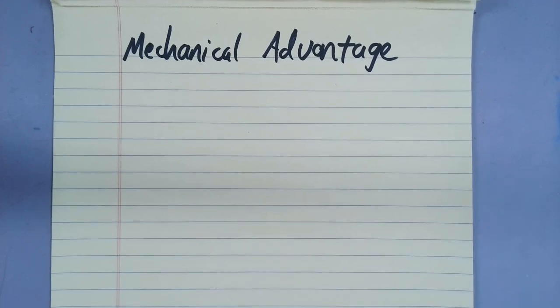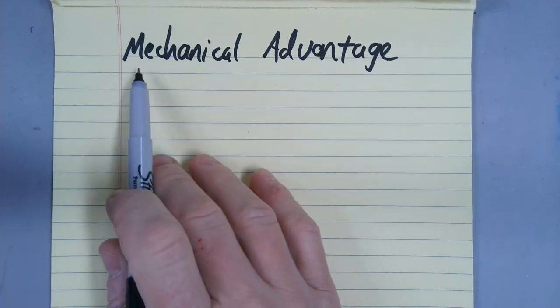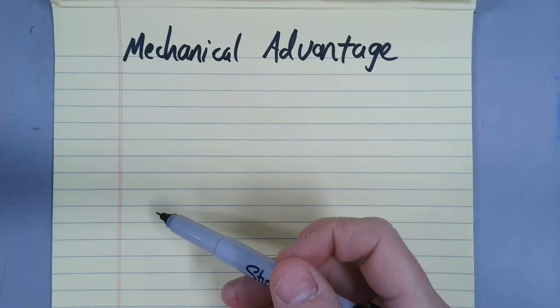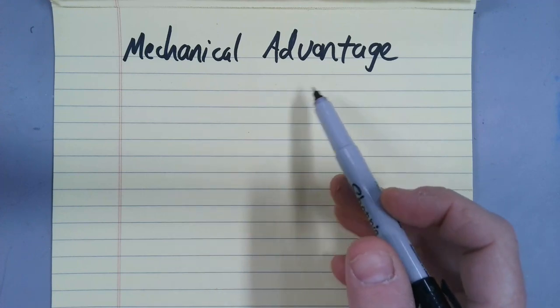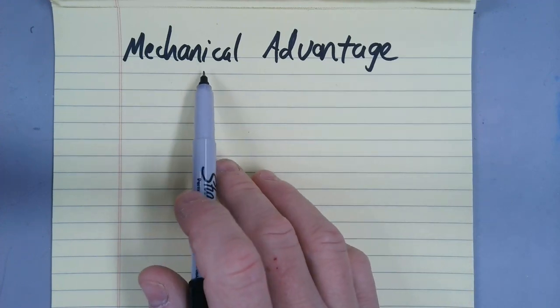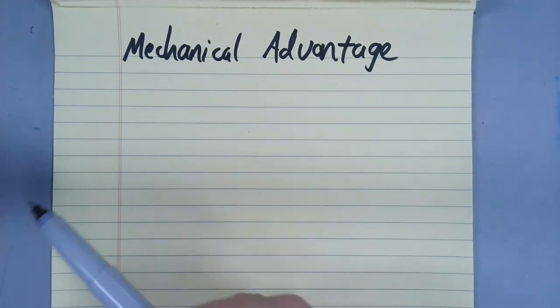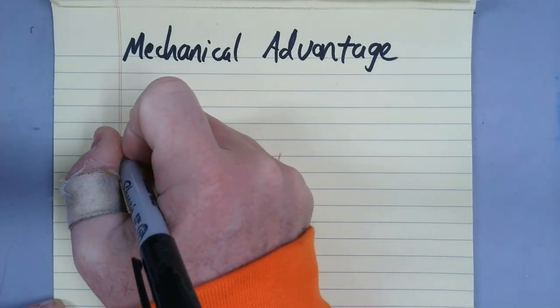So today we're going to talk about the concept of mechanical advantage. Let's look at these words. What does mechanical mean? Mechanical means referring to a machine. Advantage means some help. So in its simplest sense, mechanical advantage is a machine helping you to do work.